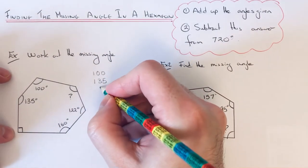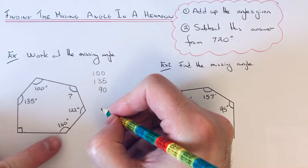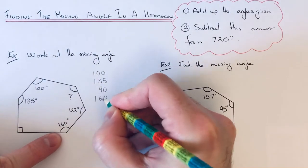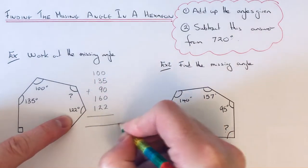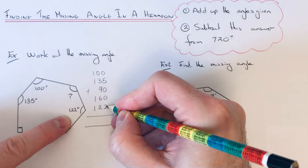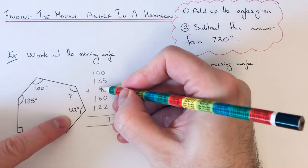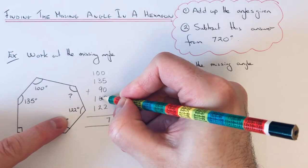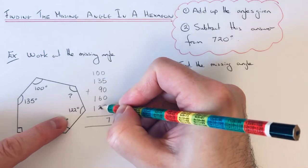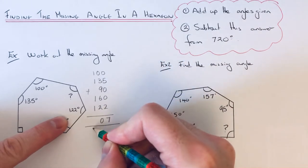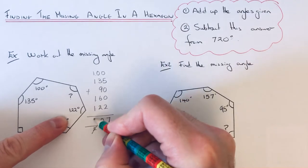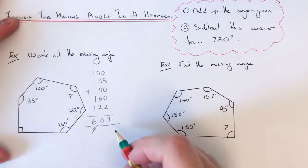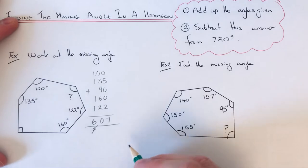Make sure you include that right angle there which is 90. So 5 and 2, 7, 9, 15, 18, 21. 2, 3, 4, 5, 6. So our total is 607 degrees. And then we just take that away from 720.